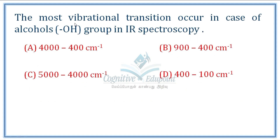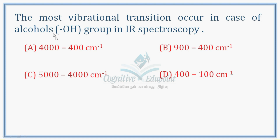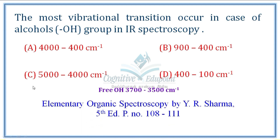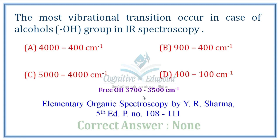Next question: The most vibrational transition occurs in the case of the alcohols group in IR spectroscopy. For a primary alcohol, the free OH group appears at 3,700 to 3,500 cm⁻¹. The correct answer corresponds to 3,300 to 3,700 cm⁻¹. Hydrogen bonding affects the position, but there is no definitive answer available for this question.